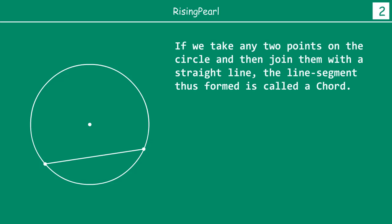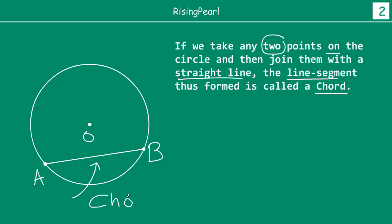Now a few other important things. If you take any two points on the circle itself and join them, that is what we have done. We have taken point A, taken point B, and this is our center O. If you simply join AB by a straight line, the line segment thus formed is called a chord. So AB is called a chord — C-H-O-R-D. The line segment AB is a chord.